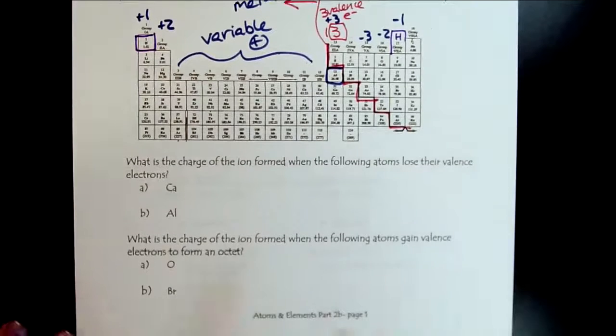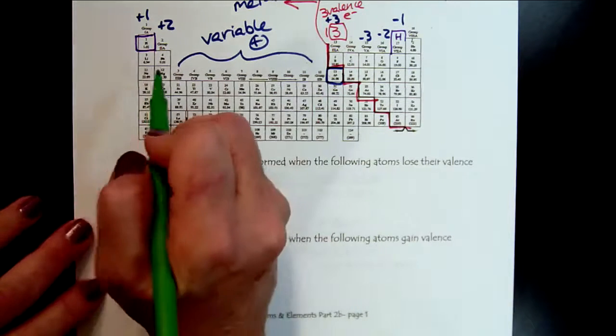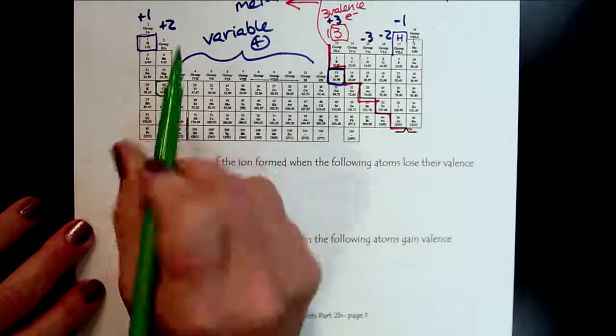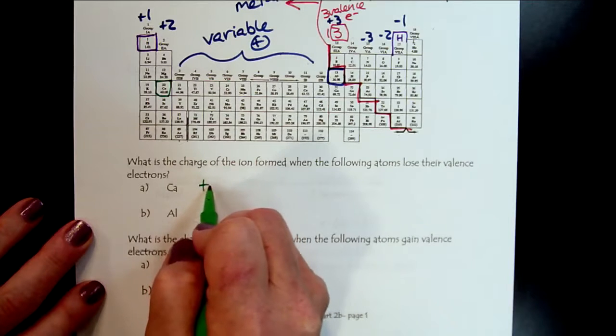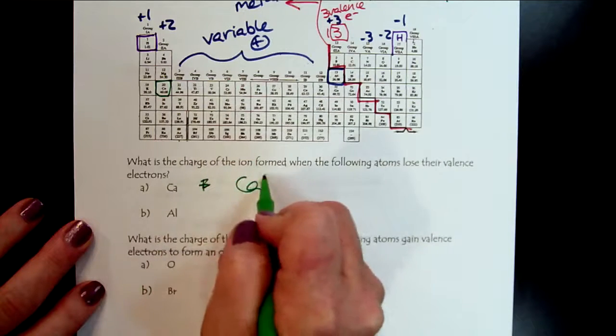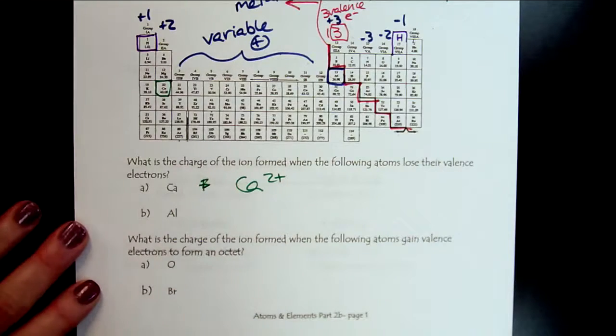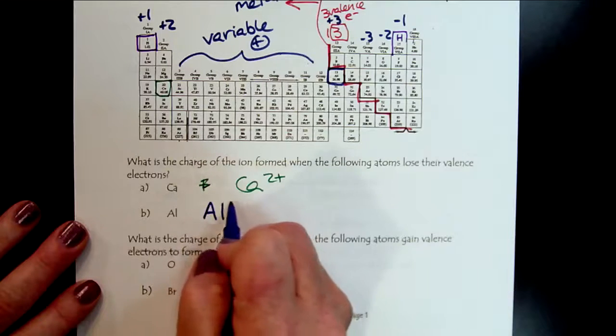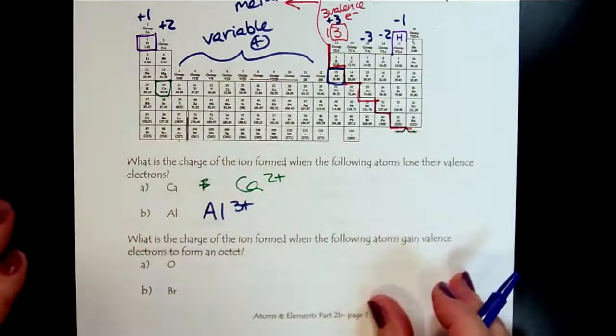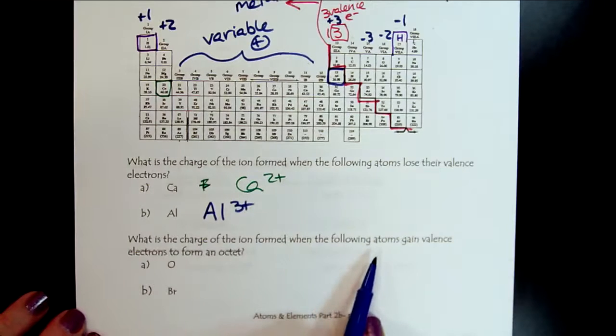If we look here, for example, calcium. Here's our calcium. It has two valence electrons. We know that calcium two plus. And then there's our buddy aluminum right there. So it has three valence electrons. So it's plus three.